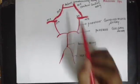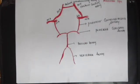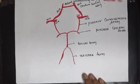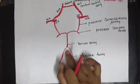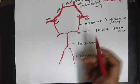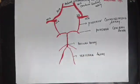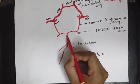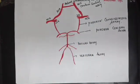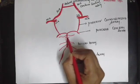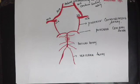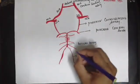The posterior part is formed by the bifurcation of the basilar artery into the two posterior cerebral arteries. That is about the boundaries of this arterial circle. When asked to draw the Circle of Willis, you should also mention some important branches of these arteries. The basilar artery gives out the anterior inferior cerebellar artery.